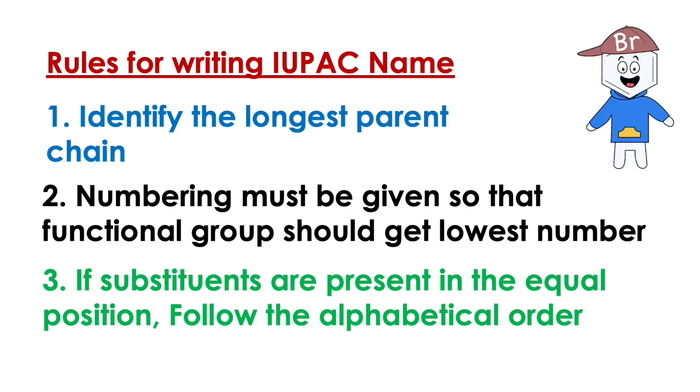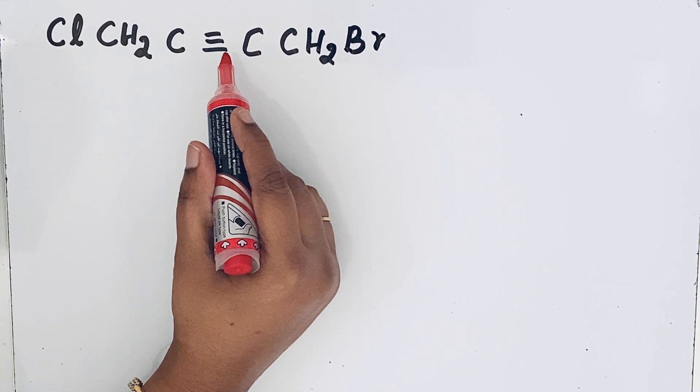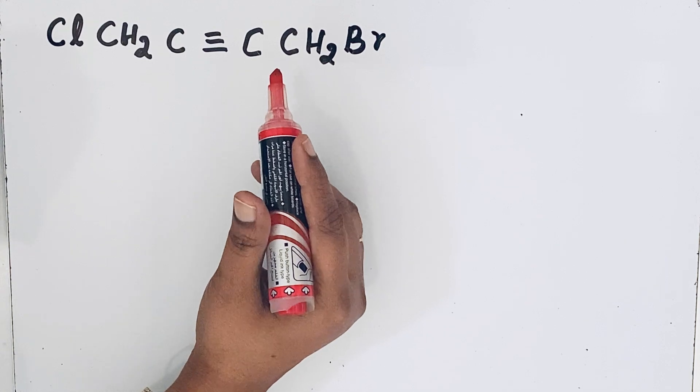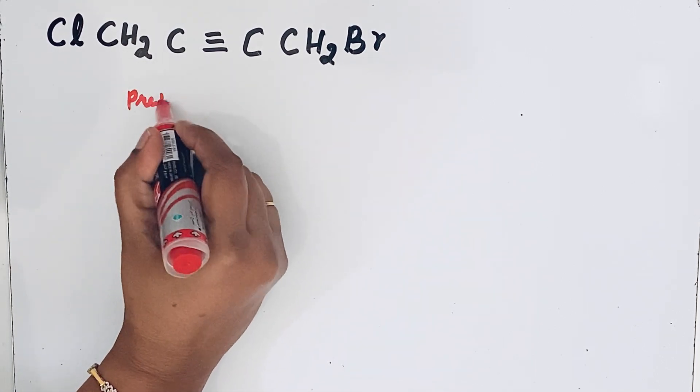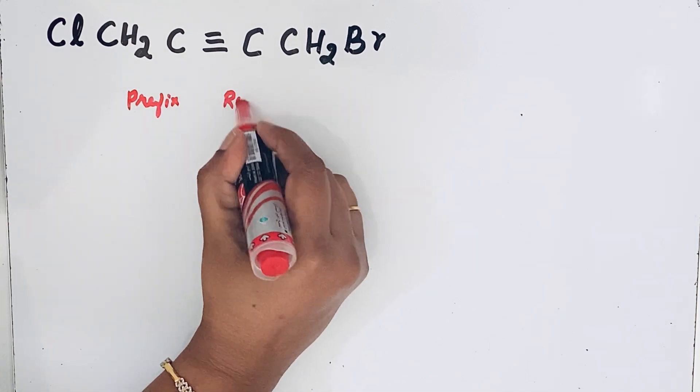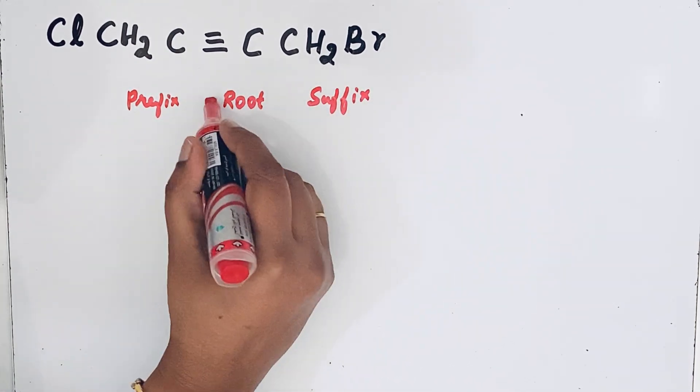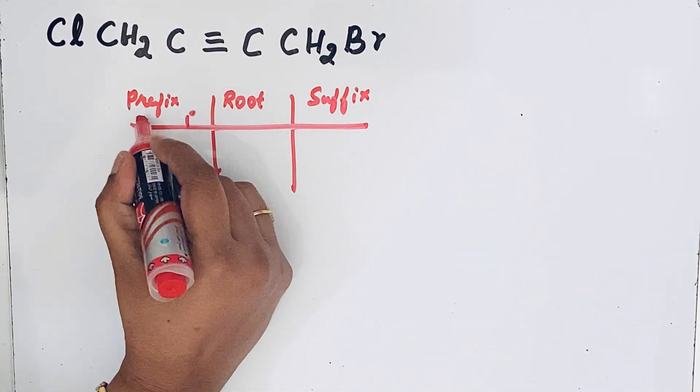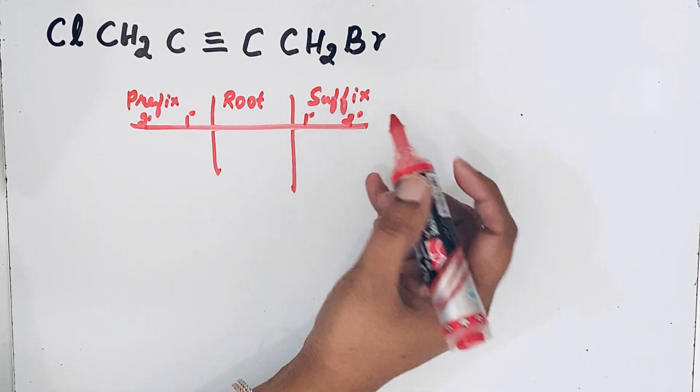So in the compound, triple bond is here so this is also a functional group. For writing that IUPAC name, first let us draw the format: prefix, root, and suffix. So prefix also primary and secondary, same way suffix also primary and secondary.